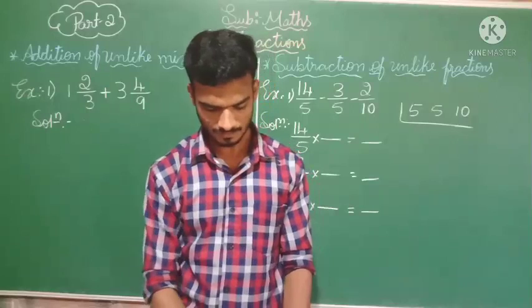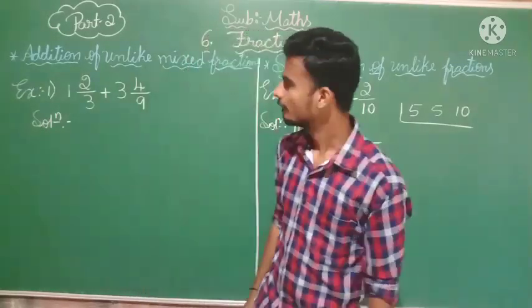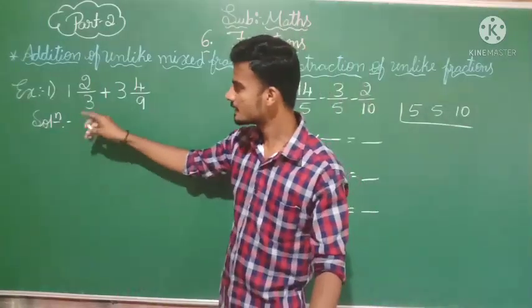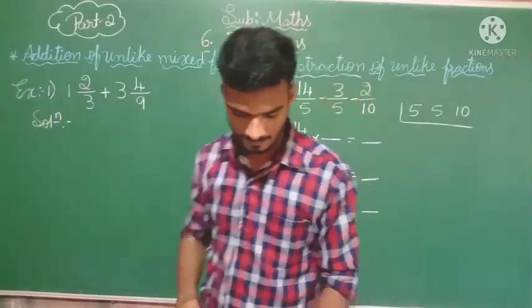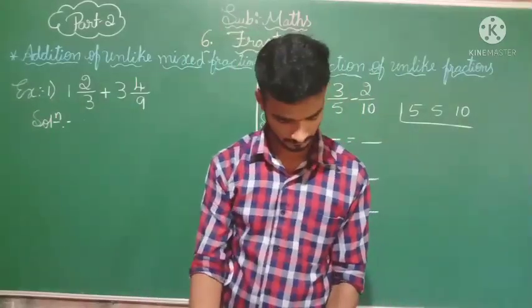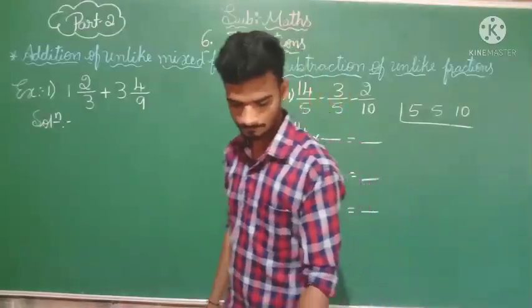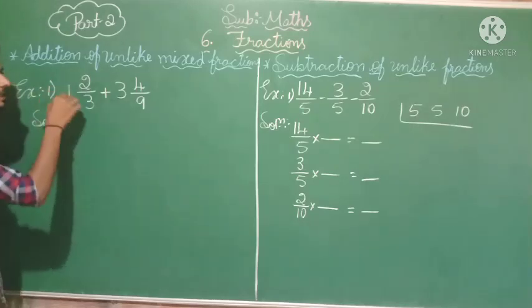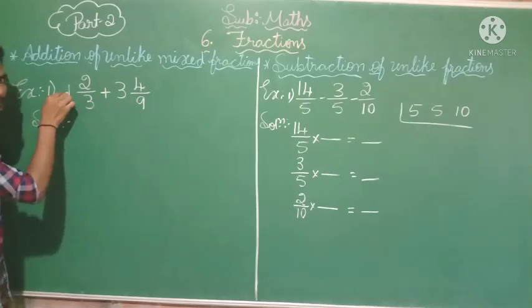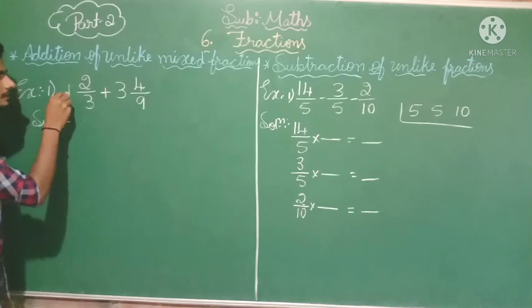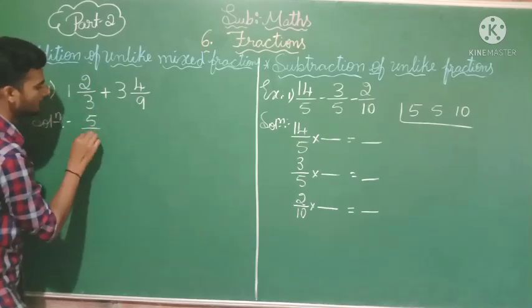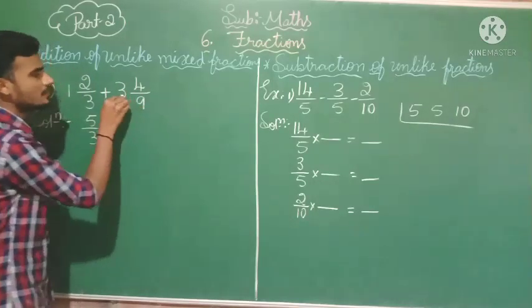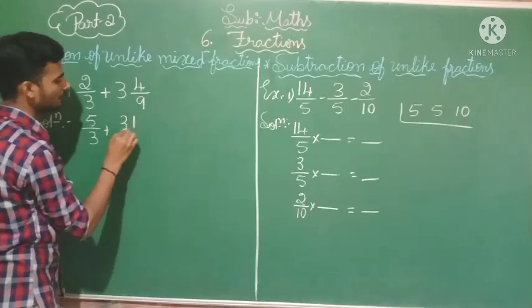Here I have taken the example 1 whole 2/3 plus 3 whole 4/9 from your exercise. To convert a mixed fraction: multiply the denominator by the whole number and add the numerator. For 1 2/3: 3 × 1 = 3, plus 2 = 5, giving 5/3. For 3 4/9: 9 × 3 = 27, plus 4 = 31, giving 31/9.